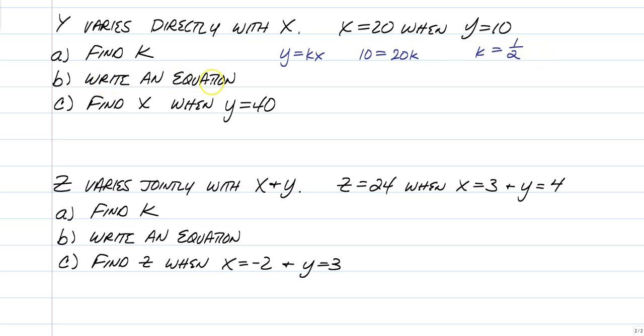Now write the equation. Y is equal to 1 half X. That is your direct variation equation for this problem. Finally, use that. Y is equal to 40. So we're going to find X. So half of what number gives you 40? Just multiply both sides by the reciprocal to get X by itself, and you get X is equal to 80. And now that's done.